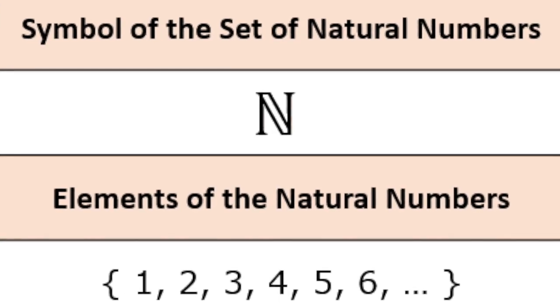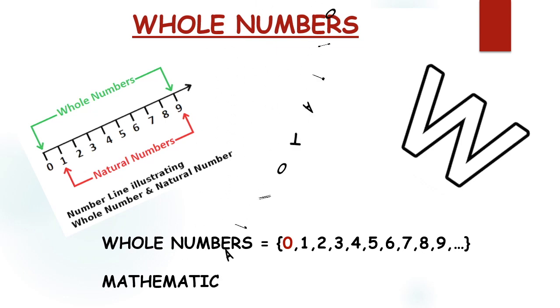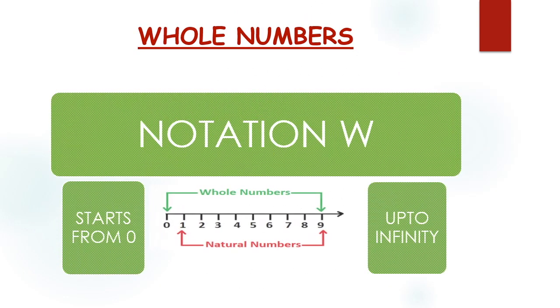The whole numbers are numbers without fractions and are a collection of positive integers and zero. Zero as a whole represents nothing or a null value. It is represented by the symbol W.